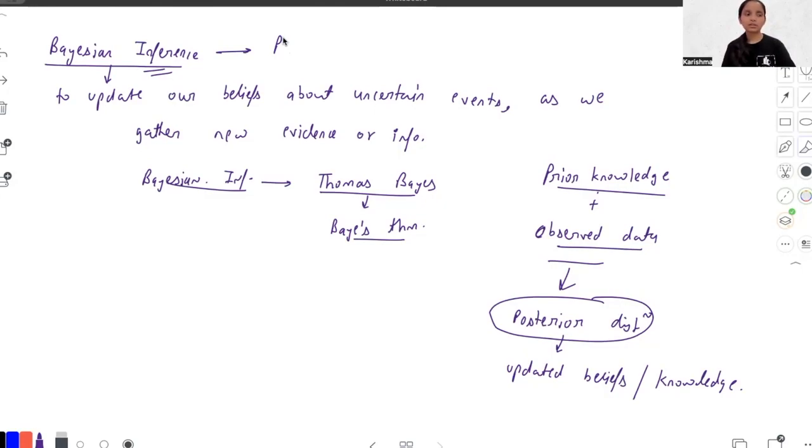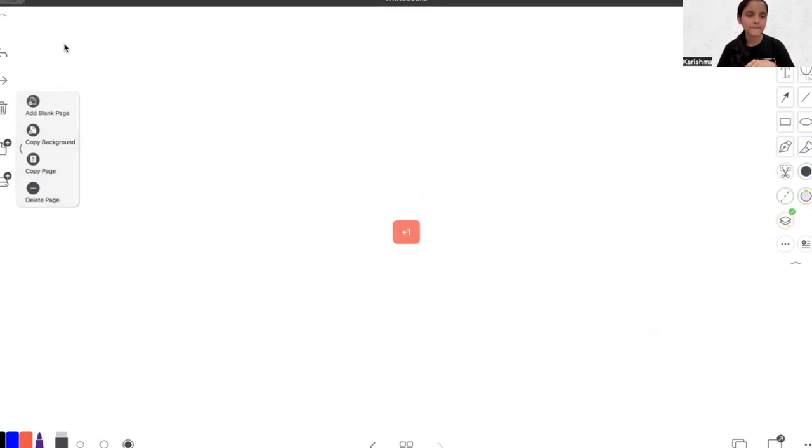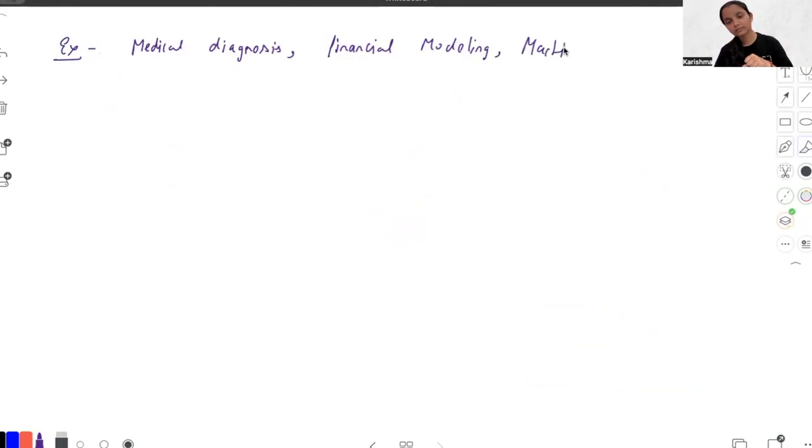Now let's discuss the applications of Bayesian inference. It has so many applications that it is widely used in some of the fields like medical diagnosis, financial modeling, machine learning, and weather forecasting. These are the practical relevance of Bayesian inference across domains.